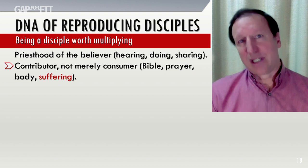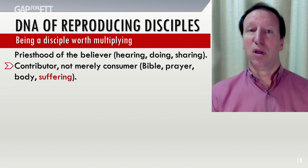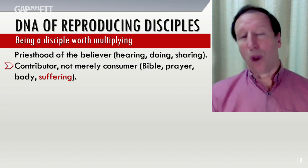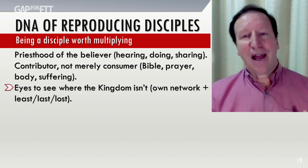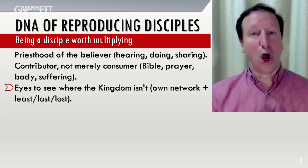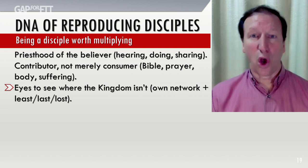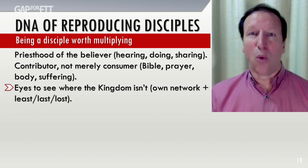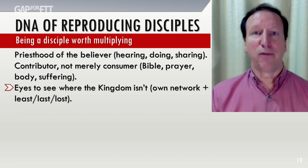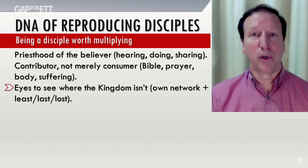We need every disciple to recognize the priesthood of the believer and to be a contributor, not merely a consumer, by equipping them to be self-feeding. We also need to equip every disciple to have eyes to see where the kingdom isn't. That includes two aspects. The first is their own network of relationships — their friends, family, neighbors, co-workers, classmates, people with whom they have an ongoing relationship. They need to be aware that God has placed these people in their life for a purpose, and they need to steward that influence well, with patience and persistence.